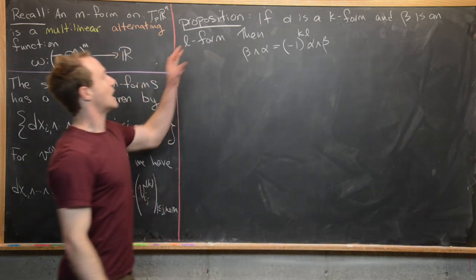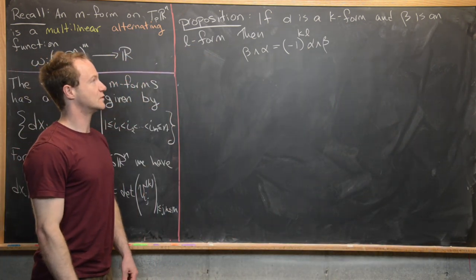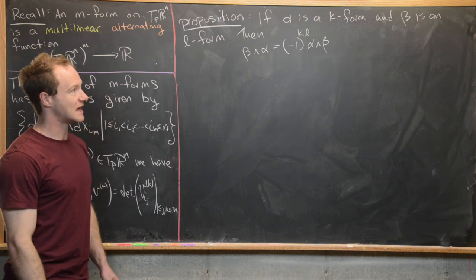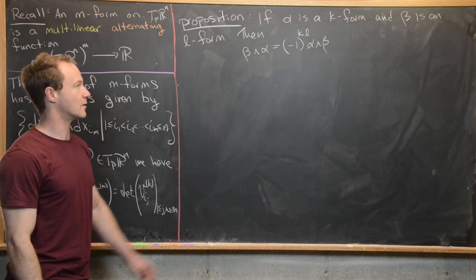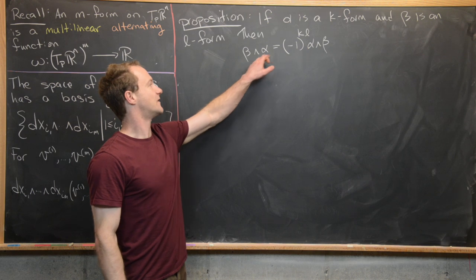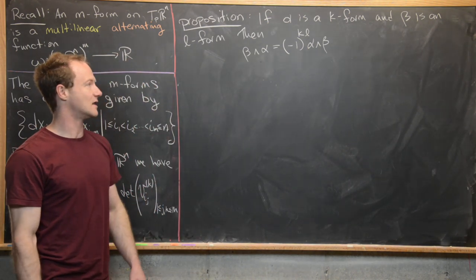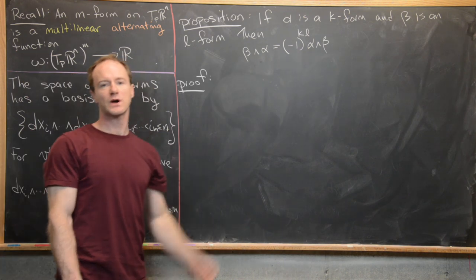Now we want to prove the following proposition: if α is a k-form and β is an l-form, then β ∧ α equals (−1)^(kl) times α ∧ β.